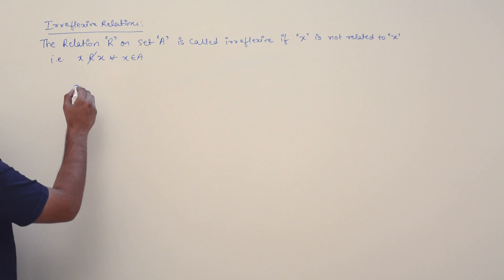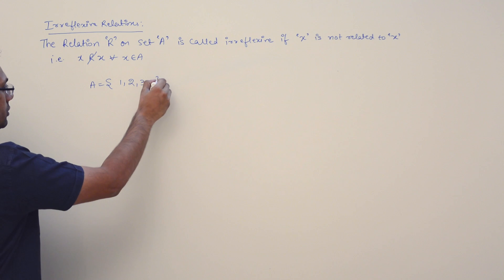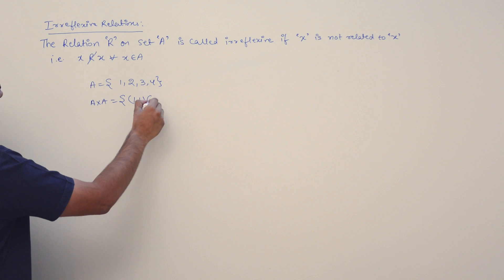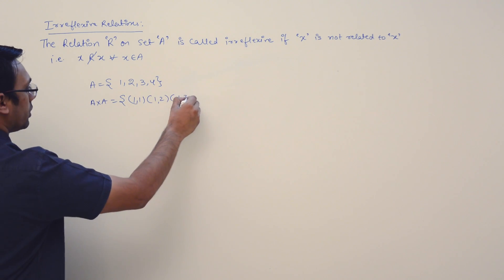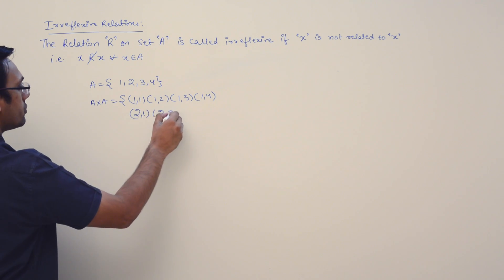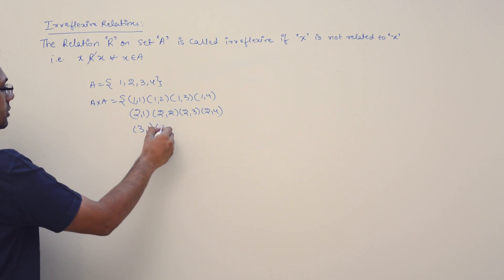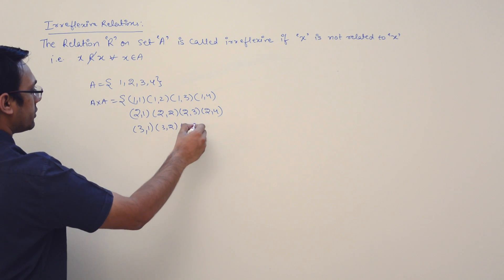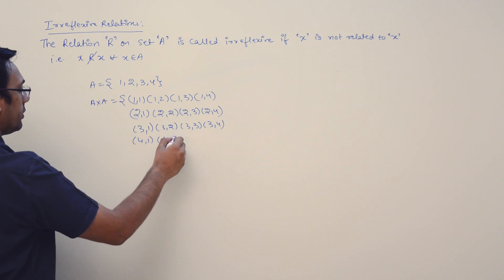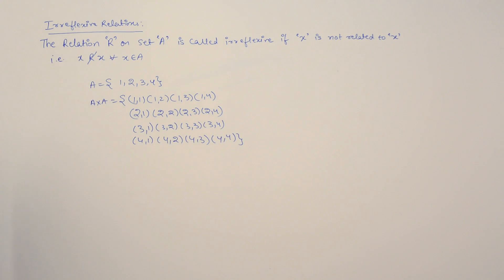For example, assume we have a set A = {1, 2, 3, 4}. Then A×A gives us the pairs: (1,1), (1,2), (1,3), (1,4), (2,1), (2,2), (2,3), (2,4), (3,1), (3,2), (3,3), (3,4), (4,1), (4,2), (4,3), (4,4). This is A×A.